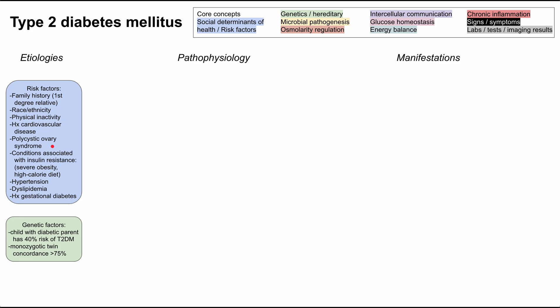There are other conditions associated with insulin resistance, including severe obesity and a high-calorie diet, which also predispose you to type 2 DM. In addition, hypertension and dyslipidemia, or high cholesterol, are risk factors. And lastly, if you've had a history of gestational diabetes during pregnancy, you're at higher risk of type 2 diabetes.